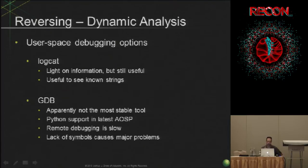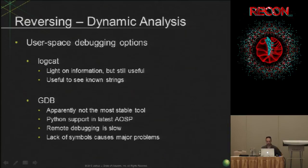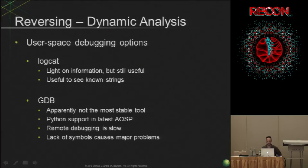On the dynamic analysis side, one of the easiest things to get into is logcat. If you have root access, with logcat you can see all the logs including baseband logs. It's great for confirming you're triggering the code you want to trigger. GDB, on the other hand, although useful, is not the most stable tool. It does have Python support and is in the AOSP build, but it is slow to do remote debugging over USB, and over Wi-Fi is even worse.